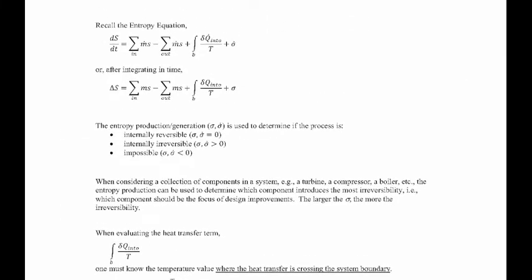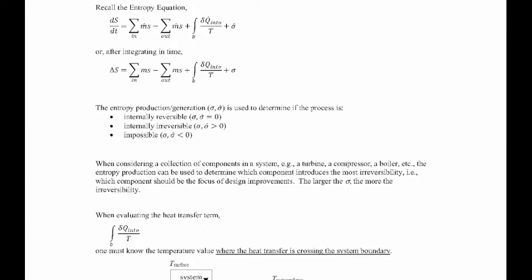Recall that we have the entropy equation in two forms. The top form is the rate form — the rate at which you're producing entropy in your control volume. The summation term with subscript 'in' is the rate at which entropy is brought in through the inlets. The second summation term is the rate at which entropy is removed through the outlets. The boundary integral is the reversible entropy brought in through heat. Integrating that equation in time gives the second equation.